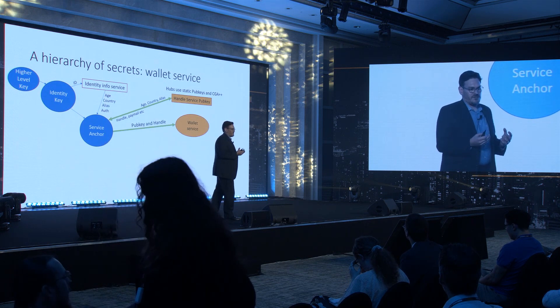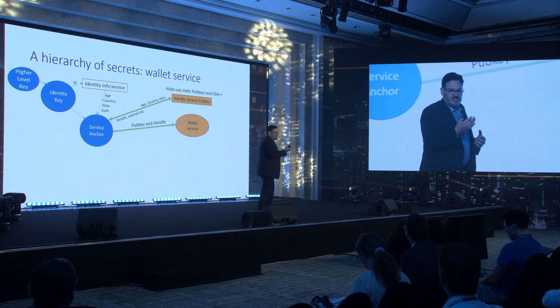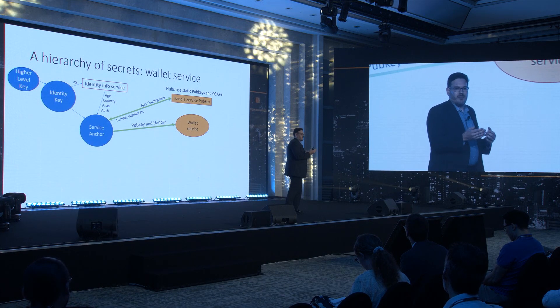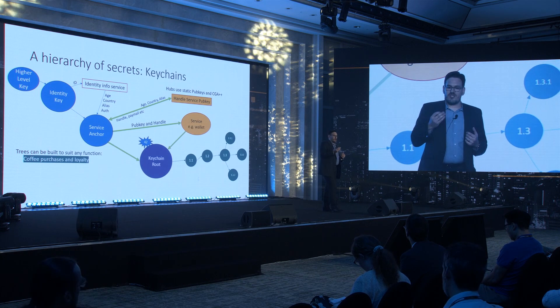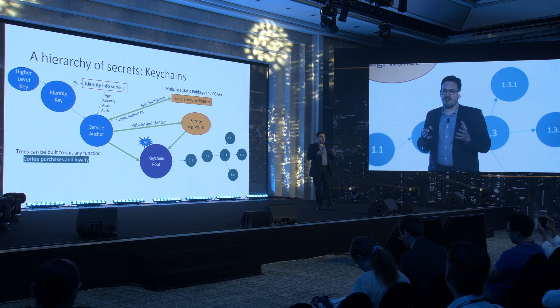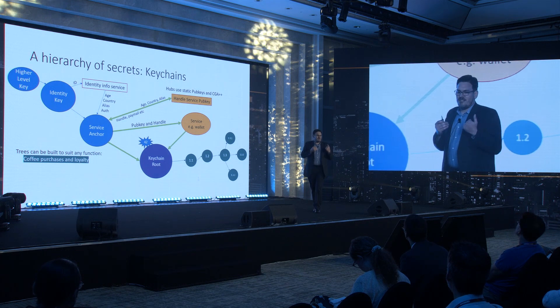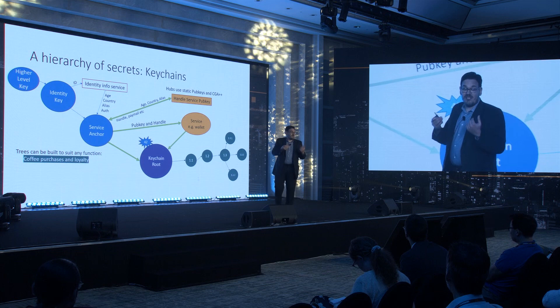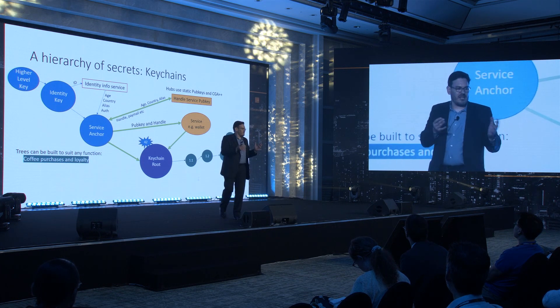To establish a service with a third party, the user would first reach out via that service's pub key and a cryptographically generated IP address and provide their own pub key and handle. The user and the service would use the techniques in White Paper 42 to establish a keychain root address which is shared between the user and the service. They can have multiple IPv6 addresses that they communicate with and use as a basis to generate different keychains of all kinds.